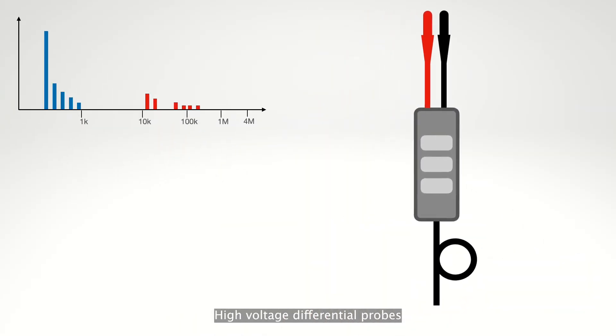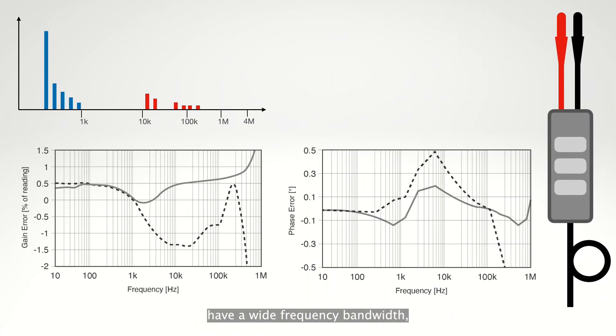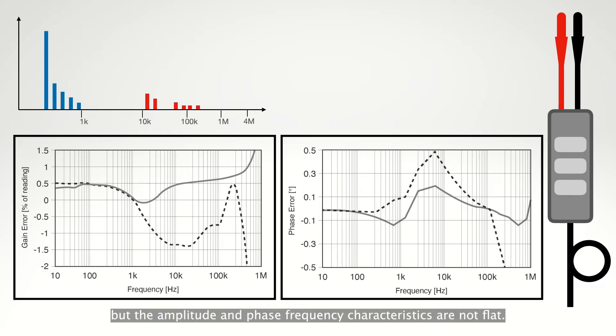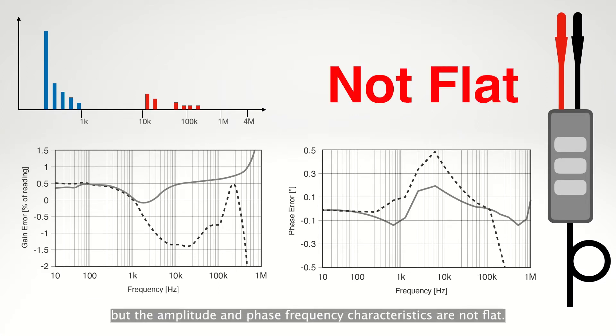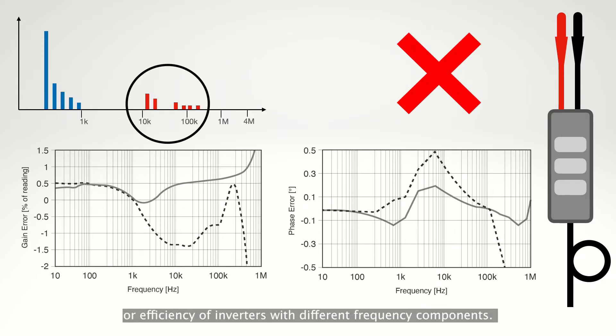High voltage differential probes have a wide frequency bandwidth, but the amplitude and phase frequency characteristics are not flat. Because of this, it is not possible to accurately measure the output power or efficiency of inverters with different frequency components.